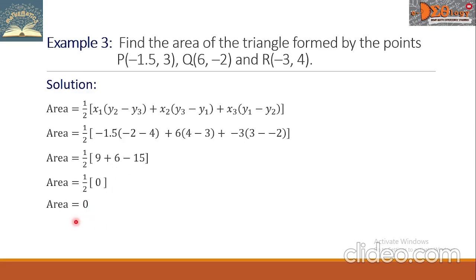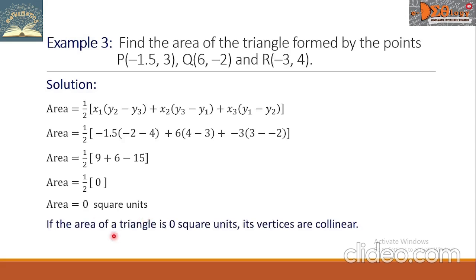So the area is 0 square units. If the area of a triangle is 0 square units, its vertices are collinear.